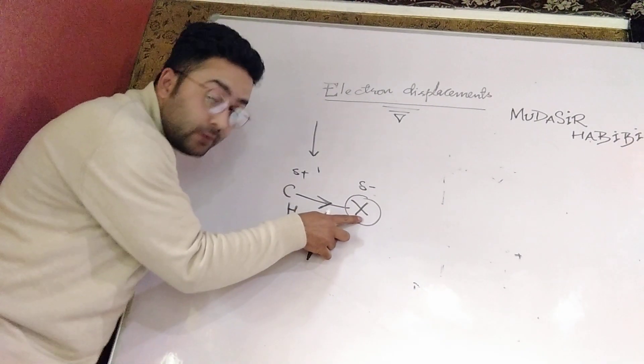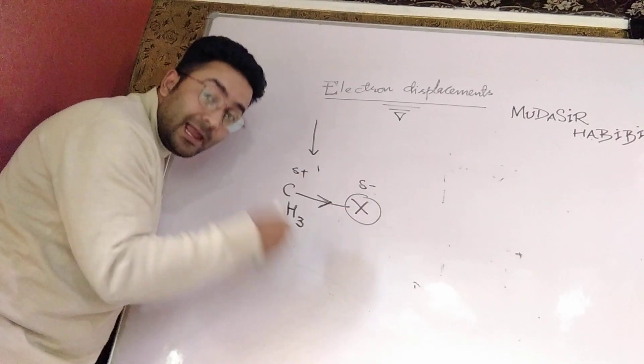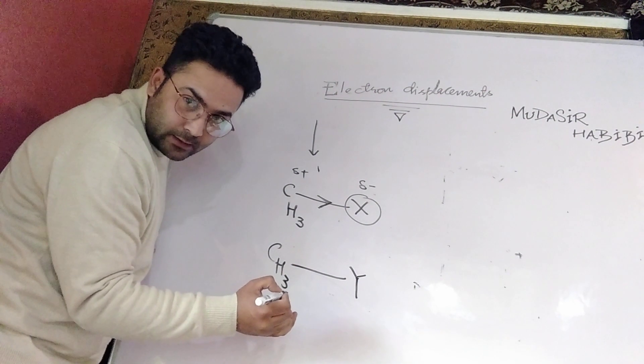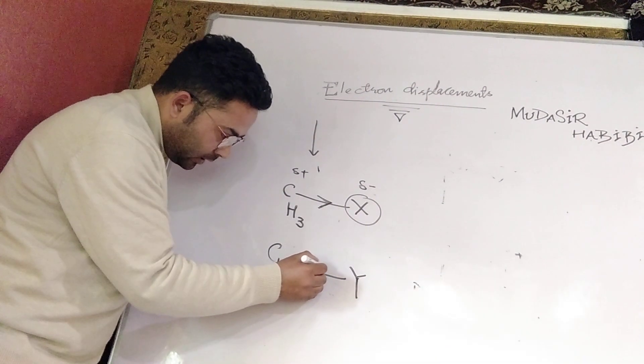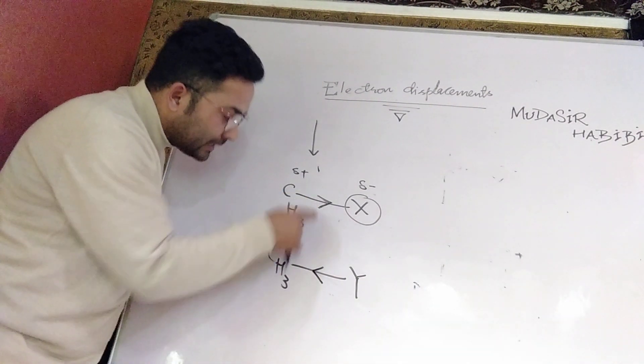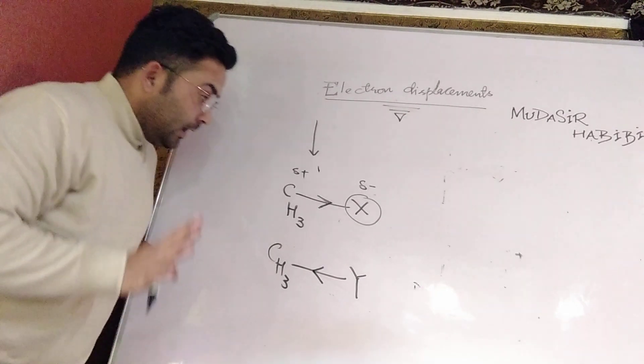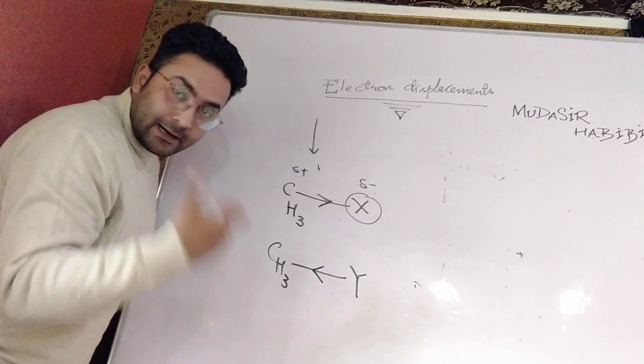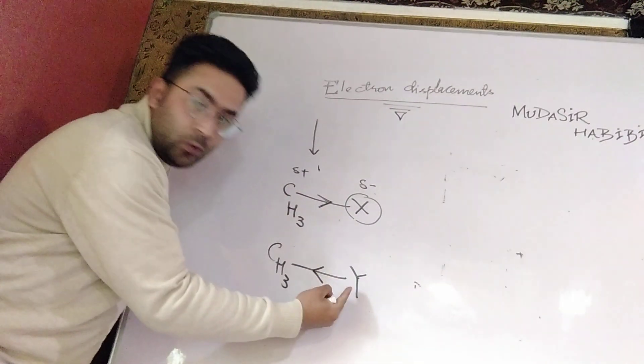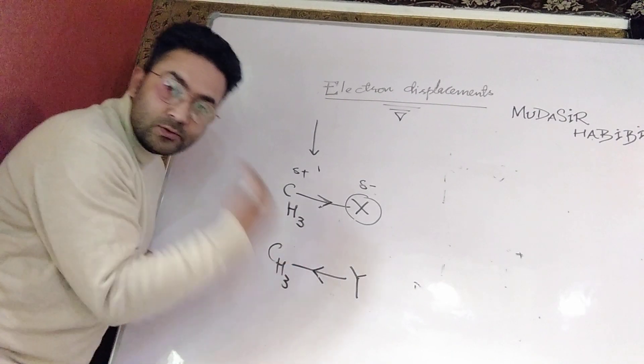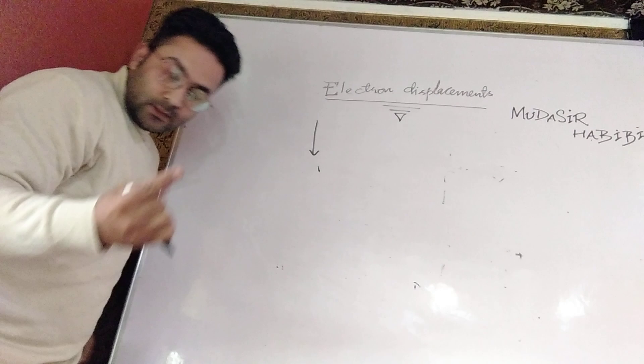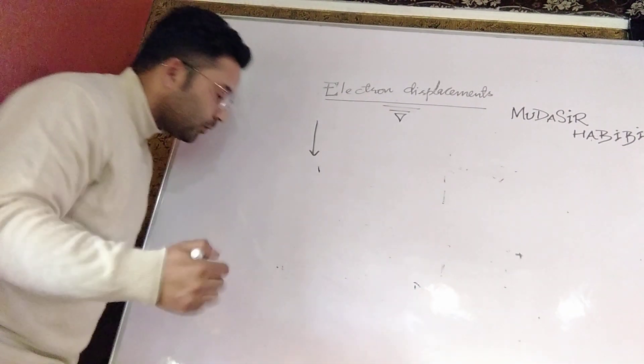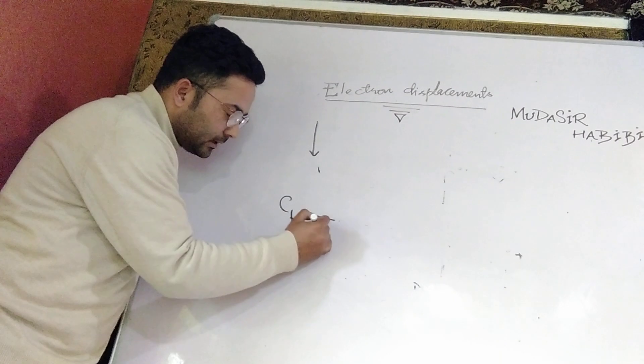One case of electron displacement is that we must have one atom or group generally having high electron withdrawing power. There is another case: if there is a less electronegative atom or less electronegative group, that will donate, or the electrons will be taken away from that group. In both cases, electron displacement will take place. This means electron displacement in an organic compound will occur only when there is some group whose electron attracting tendency is either very high like X or very low like Y. In both cases, electron displacement or movement of electrons occurs.